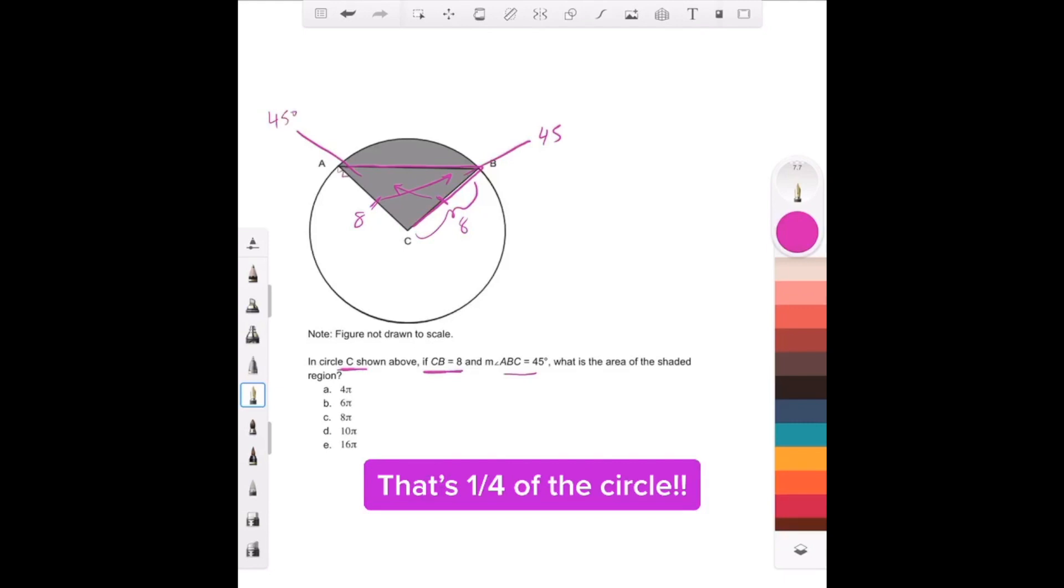Which means we're dealing with what kind of triangle? A 45-45-90, because these have to add up to 180 degrees.